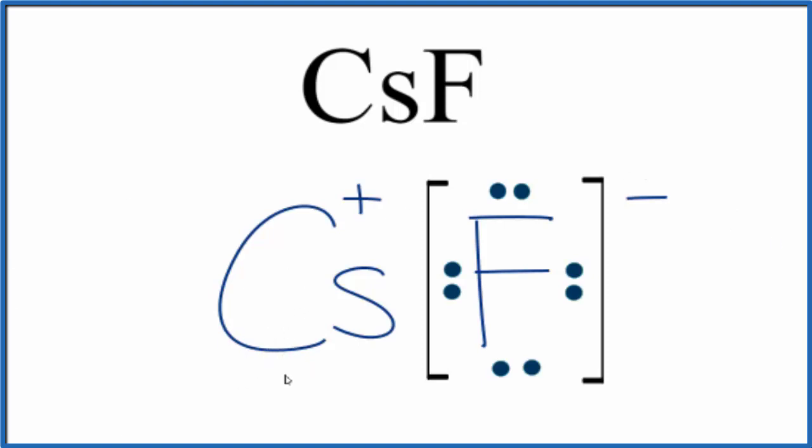If we had solid CsF, we'd have a crystal made up of a regularly repeating pattern of this formula unit. This is useful because it shows that cesium transferred its electron to fluorine, creating an ionic bond. This is Dr. B, thanks for watching.